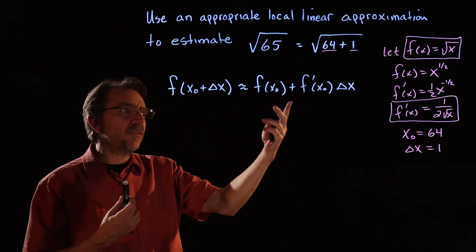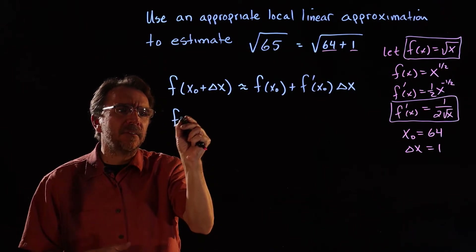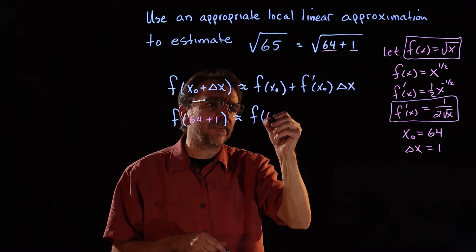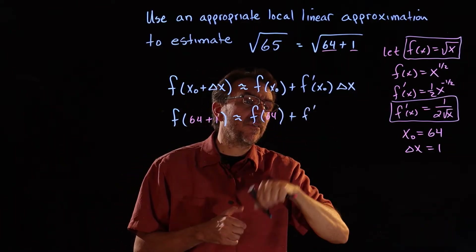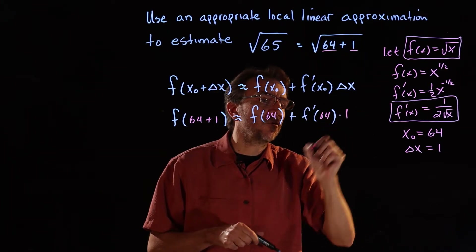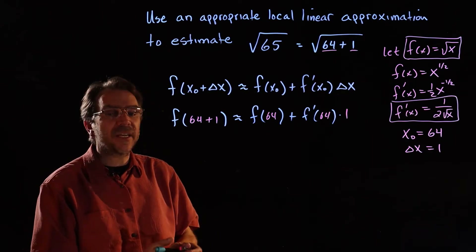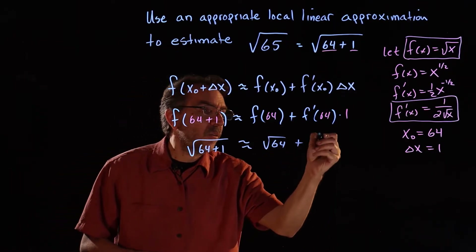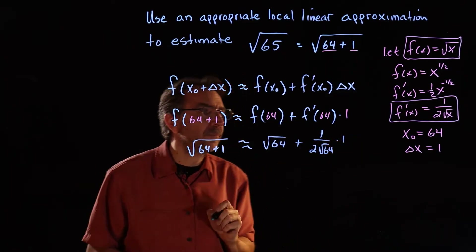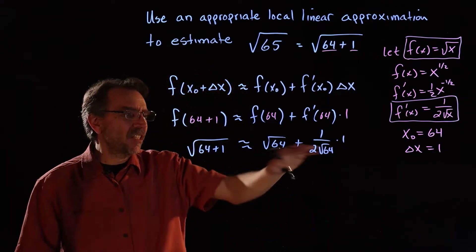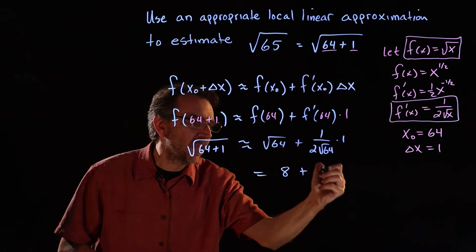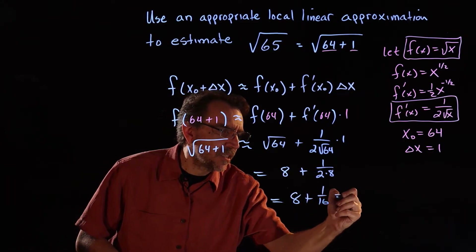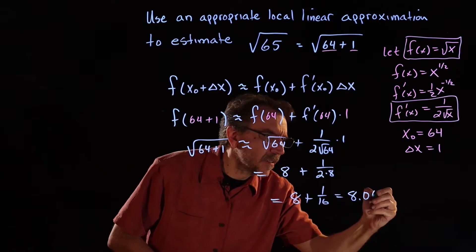Using the formula, we substitute these numbers in. We have f of 64 plus 1, approximately equal to f of 64 plus f prime of 64 times delta x of 1. That gives us: square root of 64 plus 1 over 2 times square root of 64 times 1, which equals 8 plus 1 over 16, which equals 8.0625.